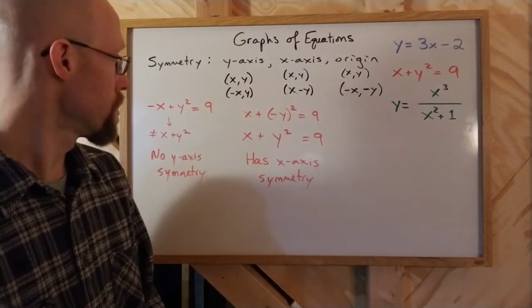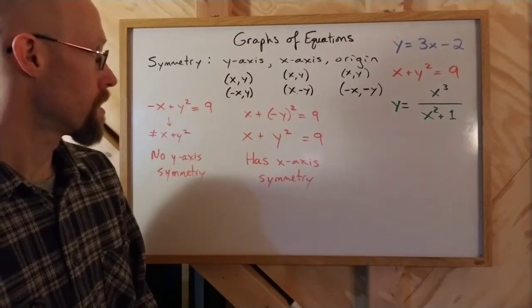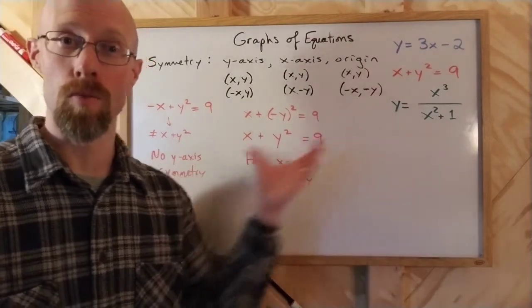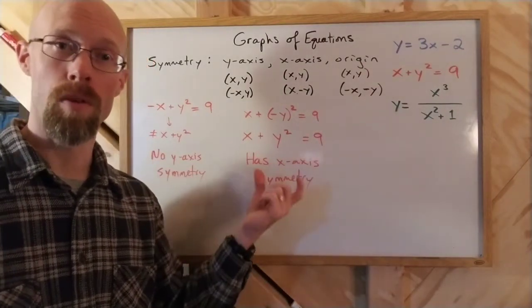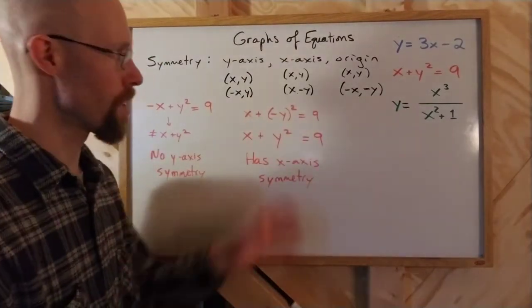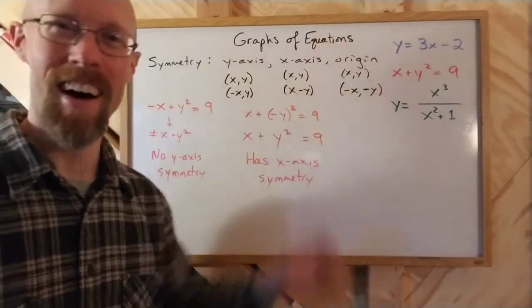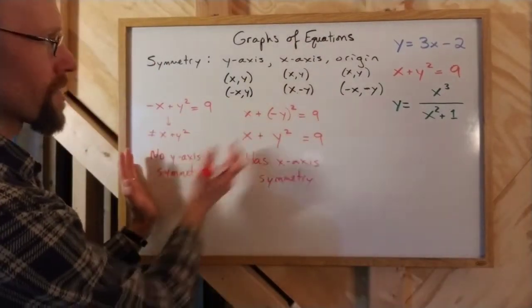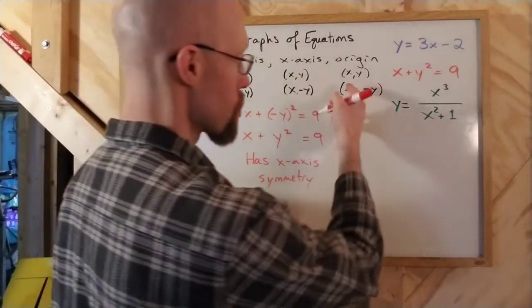However, is that right? Well, yes and no. Some origin symmetries will have neither of these. But you can't have one without the other and have origin. Maybe I'm going too far. Maybe it's better just to test it. I know that if I have one of the other two and not the other, then I can't have origin. But we'll test it anyway just to double check.